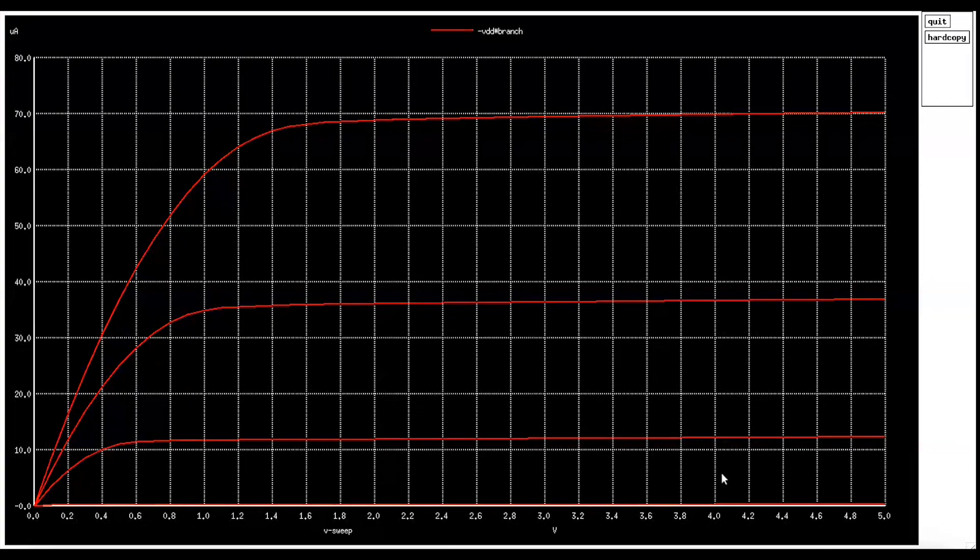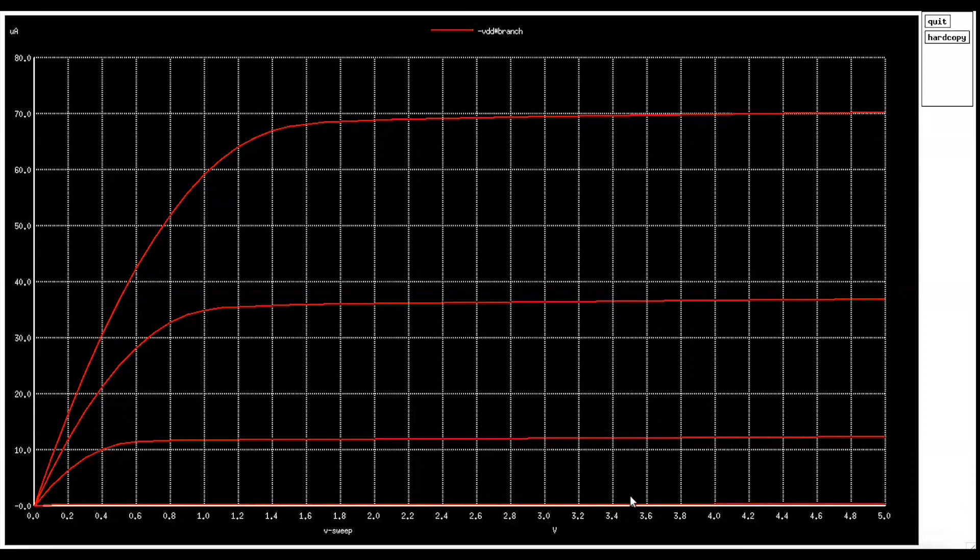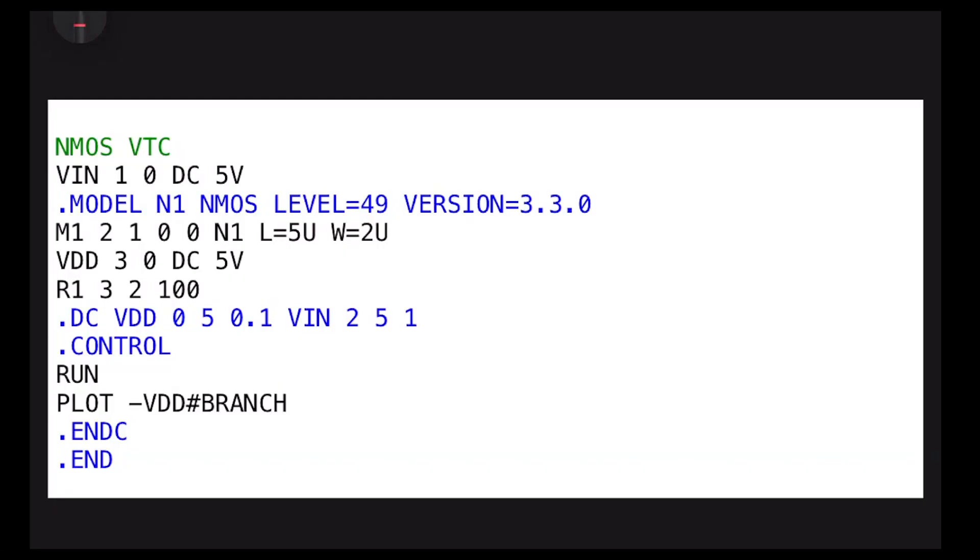How I did that - I need only one MOSFET for this characteristic. What is my aim? My aim is to sweep VDS. How can I sweep VDS? I need to change the VDD. The NMOS and the resistor are connected here.